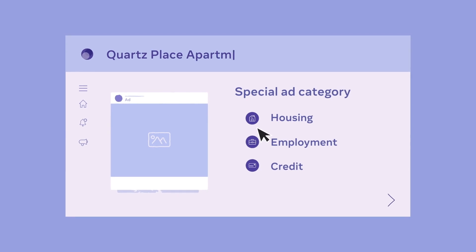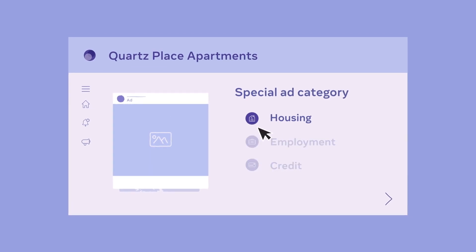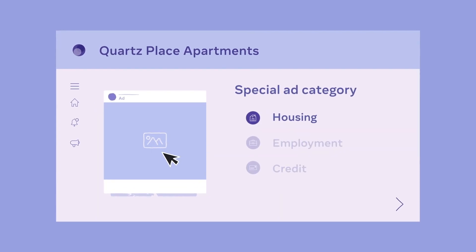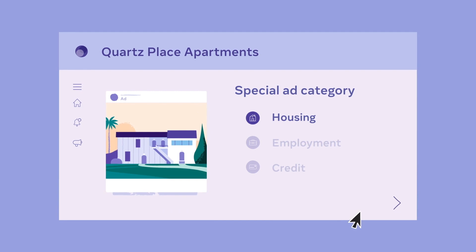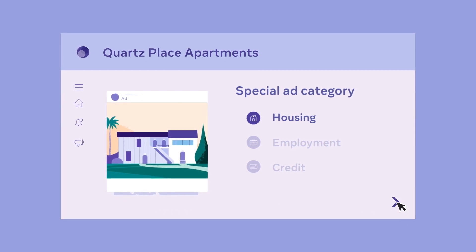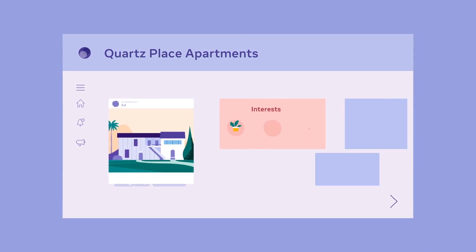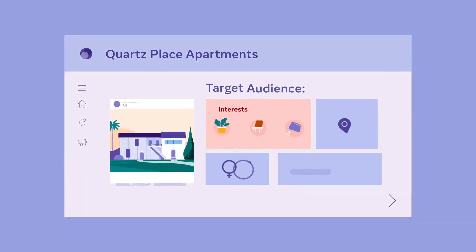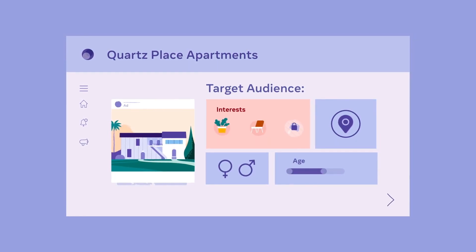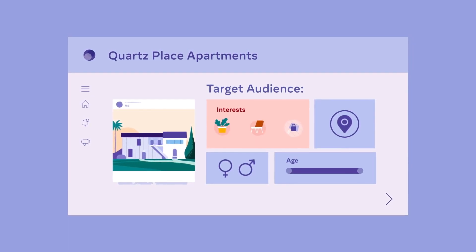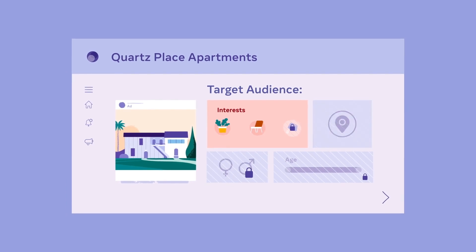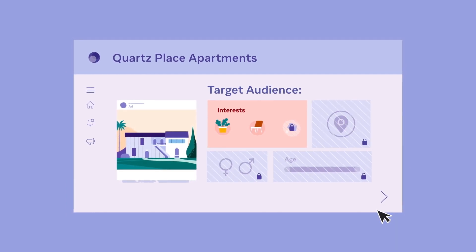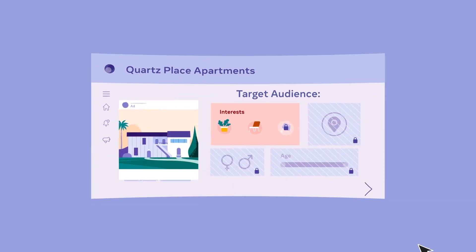The ad buying process begins when Nora defines several aspects of her housing campaign. As part of our earlier changes to help protect against discrimination, Nora is not able to use certain targeting features, such as age, gender, and postal code, when defining her ad's audience.